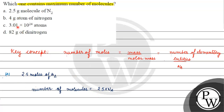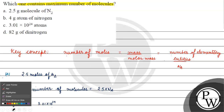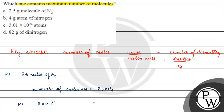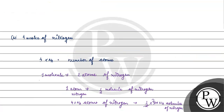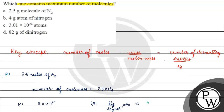For Option C, we have 3.01 × 10²⁴ atoms, which is 2.5 times Avogadro's number — but note this is atoms, not molecules. For Option D, 82 grams of dinitrogen (N₂): number of moles equals 82 grams divided by the molecular mass of 28 grams per mole, multiplied by Avogadro's number, giving approximately 2.92 times Avogadro's number of molecules.